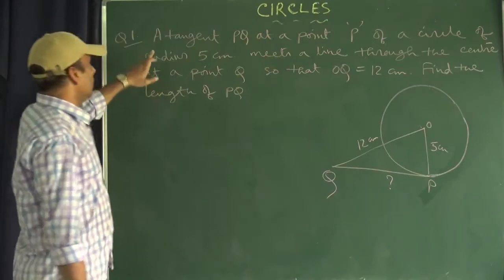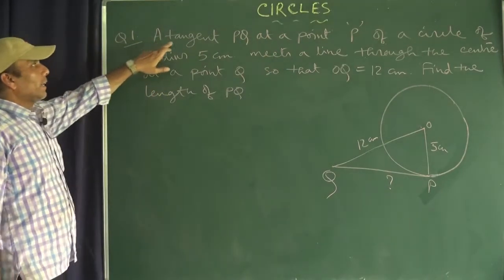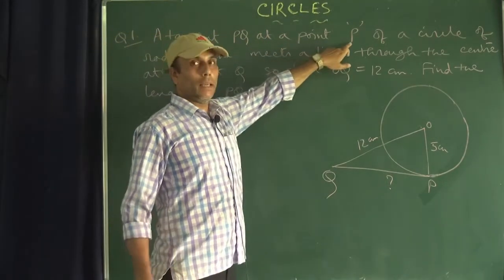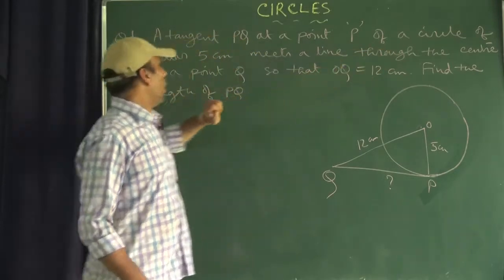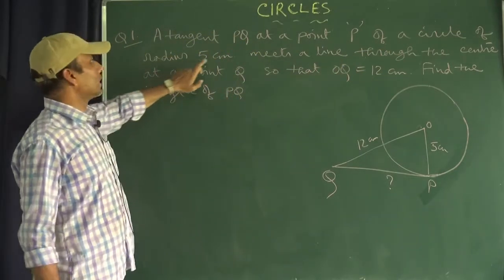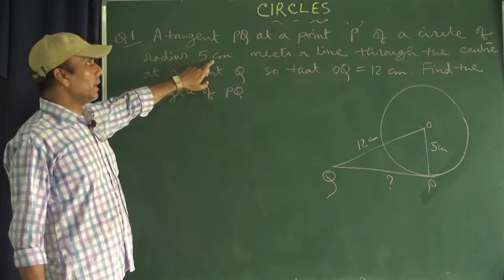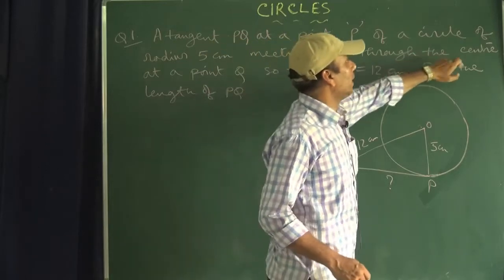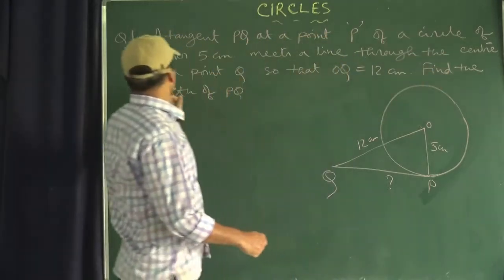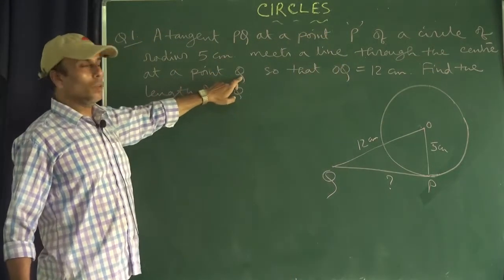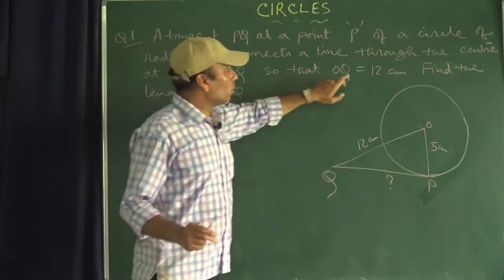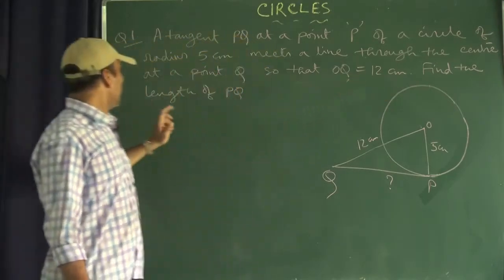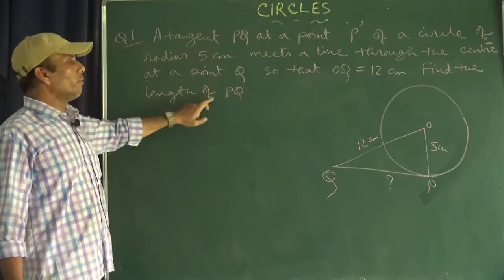So the question is: a tangent PQ at a point P of a circle of radius 5 cm meets a line through the centre at a point Q, so that OQ equals 12 cm. Find the length of PQ.